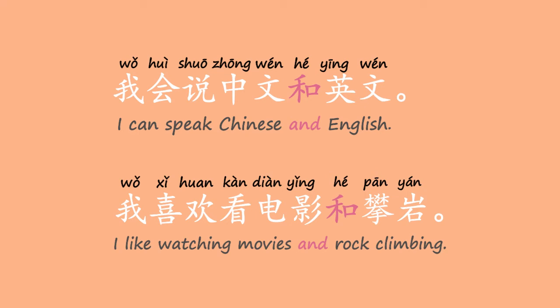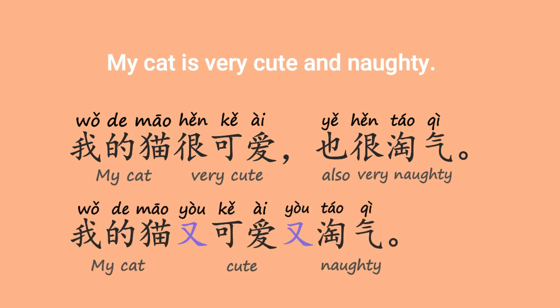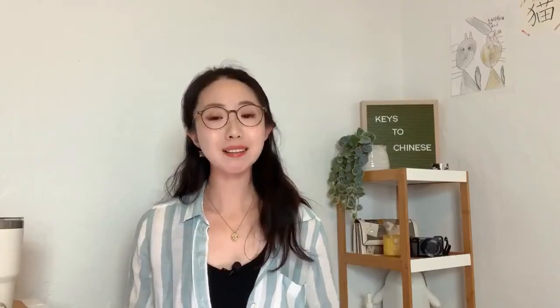We can also connect verb phrases with 和: 我喜欢看电影和攀岩, where 看电影 and 攀岩 are two verb phrases. Also, we don't use 和 to connect two adjectives. For 'My cat is cute and naughty,' we say 我的猫很可爱，也很淘气 — breaking it into two sentences using 也. We can also use the structure 又...又 to connect two positive or two negative adjectives: 我的猫又可爱又淘气.